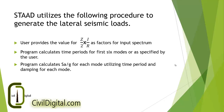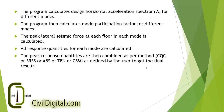Then the program calculates the time period of the first 6 modes. By default STAT calculates only the first 6 modes of vibrations unless specified. Then the program calculates the sa/g value for each mode utilizing the time period and damping for each mode. Then the program calculates the design horizontal acceleration spectrum ak value for different modes. Further, STAT calculates the mode participation factors for various modes of vibrations and the peak lateral seismic force at each floor in each mode is ascertained and the peak lateral seismic force at each floor is calculated.